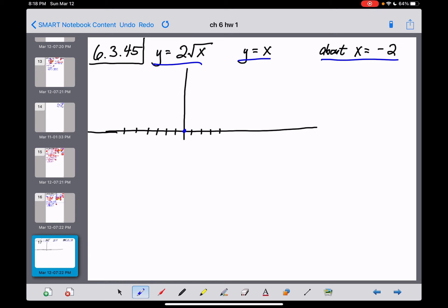So 2 root x is a square root function that starts at the origin here. Not that we care that much, but the slope between the vertex and the next point is 2. So I'd be going up 2 and right 1. So 2 root x is a little bit taller than a normal square root function.